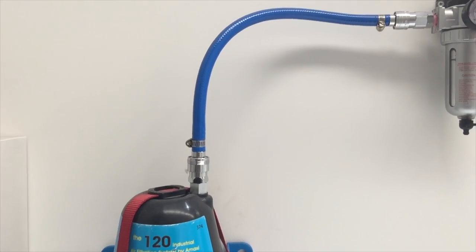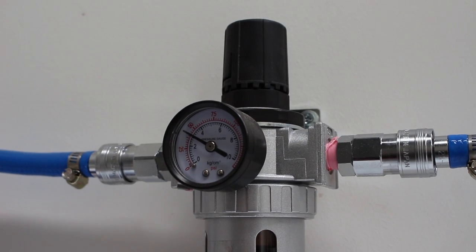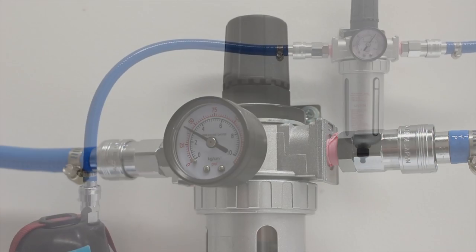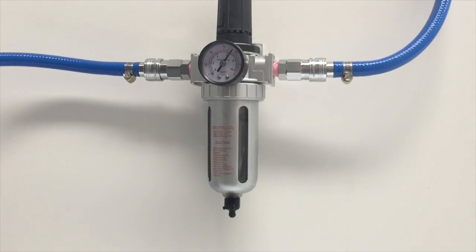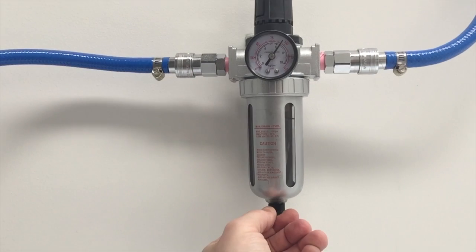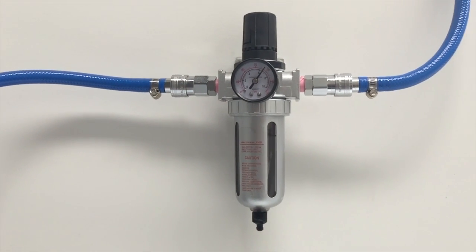So the hose again, another connection goes into this part here which is now the regulator and moisture trap. And you'll see here you can just drain the moisture out by twisting that. This moisture trap is two spray brand.